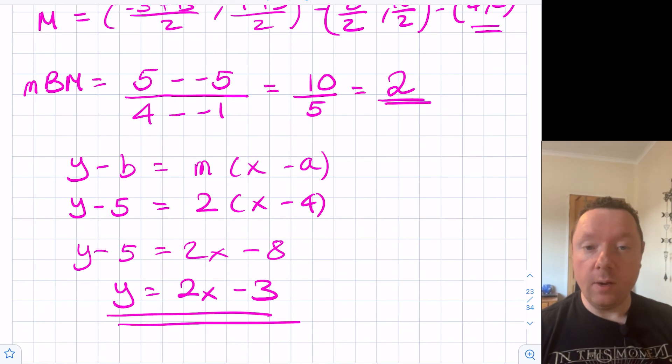This has been ClarenMaths. Today we've went through what a median is and how to find the equation of a median of a triangle. Next time we'll look at then how to find the points of intersections of lines in a triangle. Maybe between a median and an altitude or a median and a perpendicular bisector. We'll go through a number of examples like that.